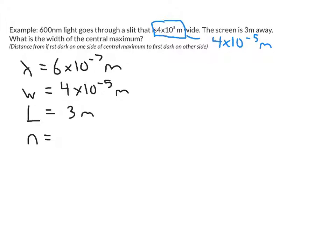If we want to go from the dark on one side of the central maximum to the dark all the way across on the other side, that's an n equals 2 situation. I'll flip back the screen to show you what I mean.